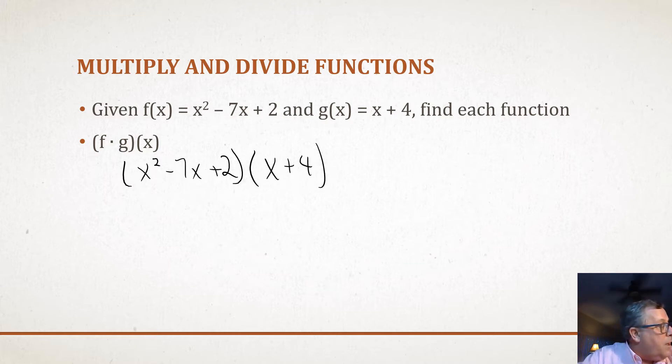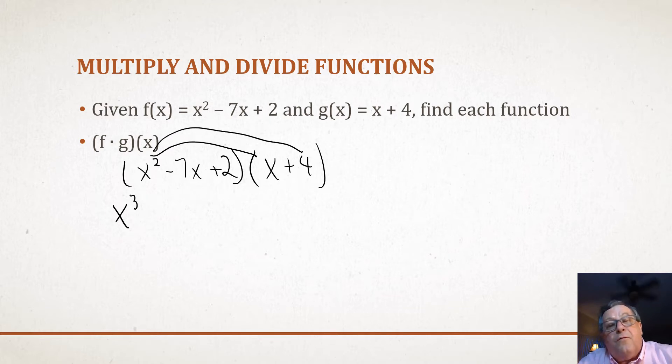I'm going to take x² and multiply it times x. So I've got x³. I went right here to here, and now I'm going x² to 4. So x² times positive 4 is plus 4x.